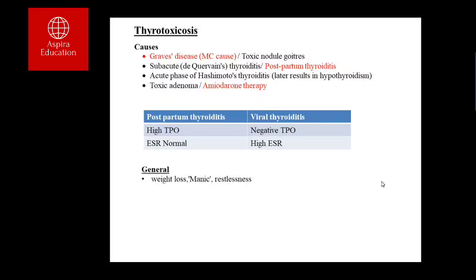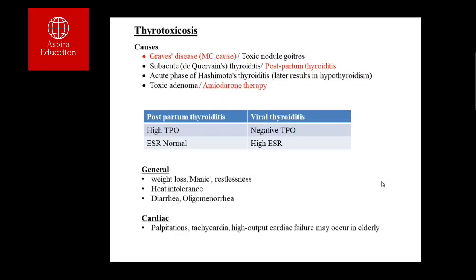Symptoms of thyrotoxicosis include weight loss, manic-like behaviour with racing thoughts, restlessness, heat intolerance (patients generate excess heat due to an elevated basal metabolic rate), diarrhoea, oligomenorrhoea, palpitations, tachycardia, and high-output cardiac failure. The latter is more common in elderly patients, and some can develop thyrotoxic cardiomyopathy — a reversible condition once thyrotoxicosis is treated. Increased sweating with sweaty palms is another important clinical clue.